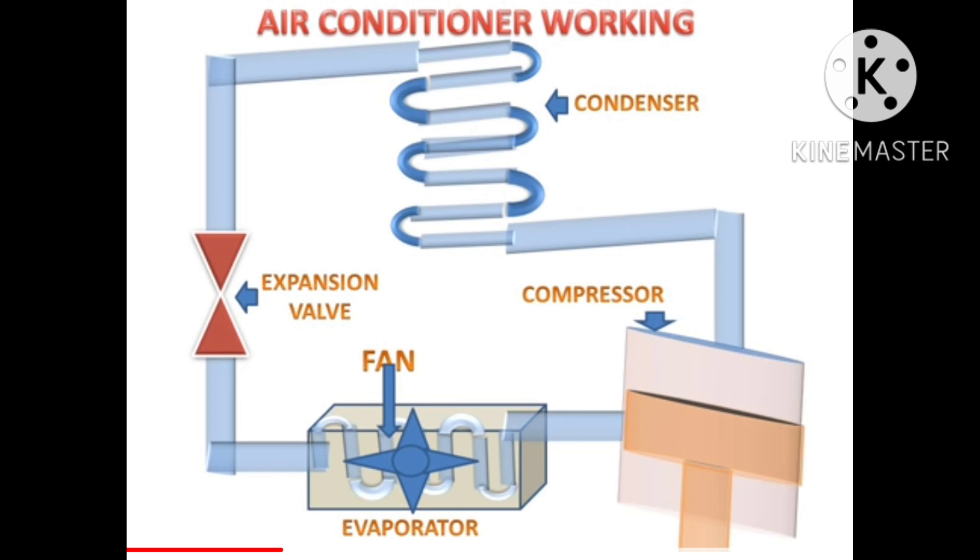Process starts from compressor where low pressure vapor of refrigerant enters the compressor. Now, this compressor compresses the air or the refrigerant and makes its pressure high. This low pressure vapor is converted into high pressure vapor.